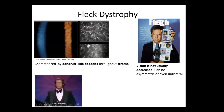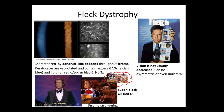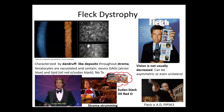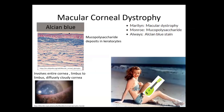Now we're on purely stromal. Fleck dystrophy — I remember the movie Fletch. Even though it is a corneal dystrophy, vision is not usually decreased. The buzzword is dandruff-like deposits — think of Chevy Chase with his cool hair. You can stain it with Alcian blue (like macular dystrophy) as well as lipid stains (like Schneider), because it has both excess GAGs and excess lipid, so you can stain with Oil Red O and Sudan black. It's autosomal dominant.